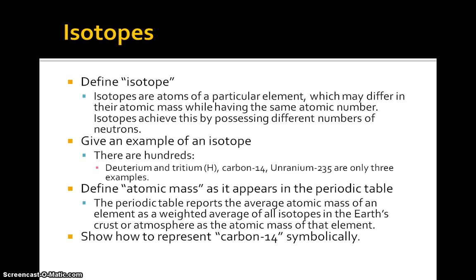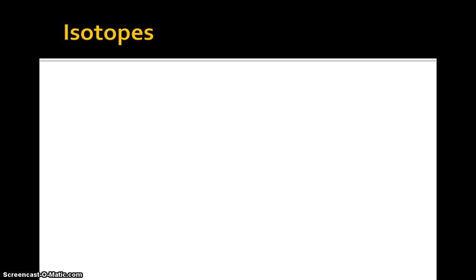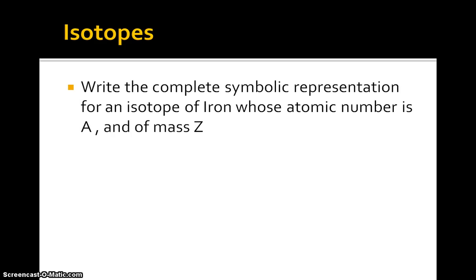To show carbon-14 symbolically, we just put a raised 14 before the C for carbon. Now, write the complete symbolic representation for an isotope of iron whose atomic number is A and mass is Z. This is asking the same thing but for the complete representation, which means giving both the atomic number and the mass as part of the symbol.